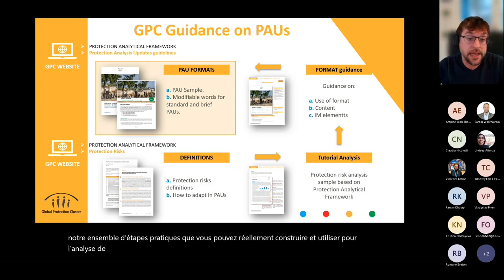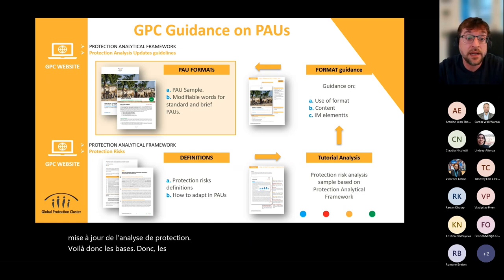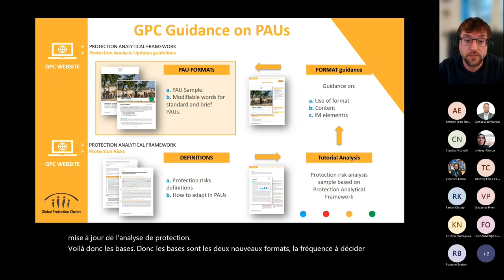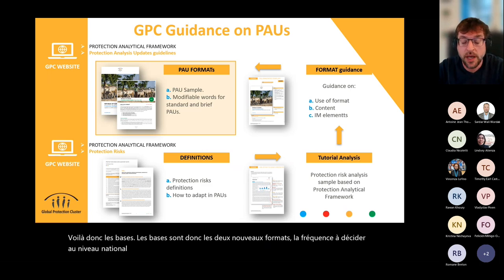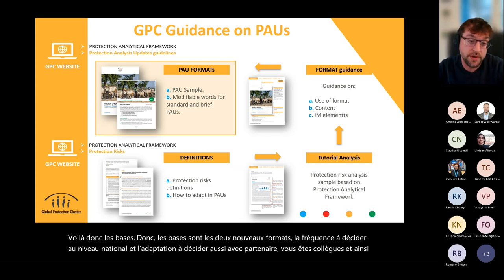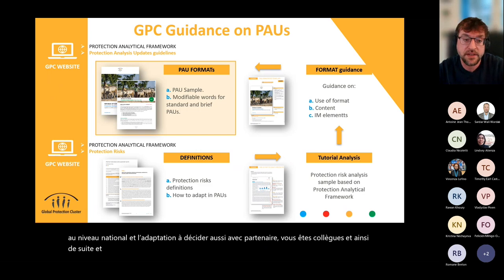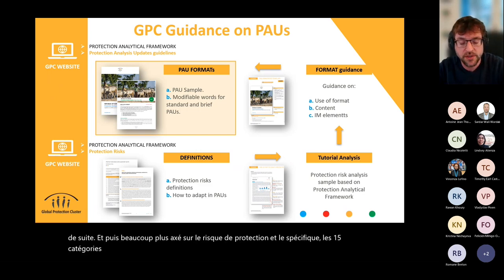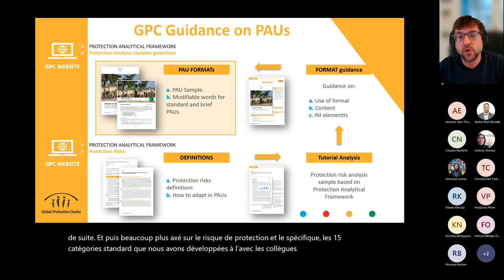So those are the basics: the two new formats, the frequency to be decided at country level with partner, AOR colleagues, and so on, and a much stronger focus on protection risks using the 15 standard categories developed with AOR colleagues. I'd like now to move to the process, but before I do, let me pause and ask if everything so far is clear, if there is any doubt or question.